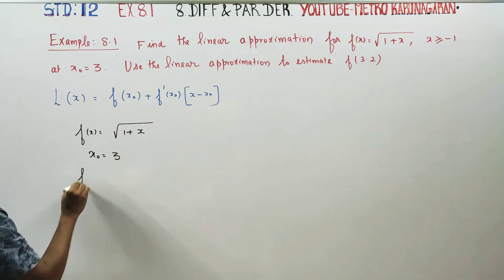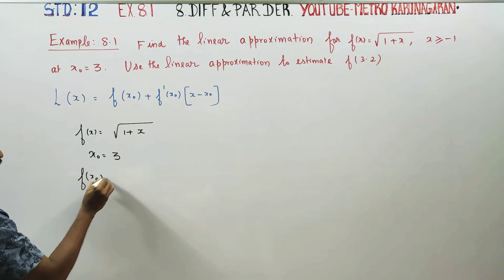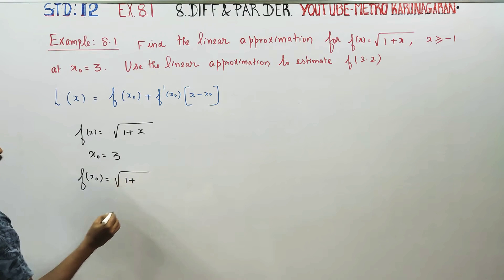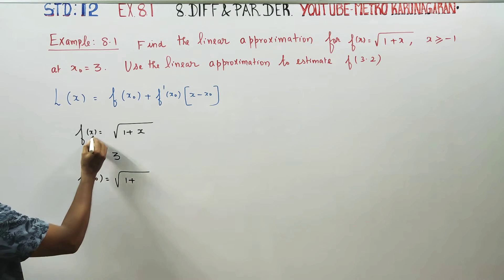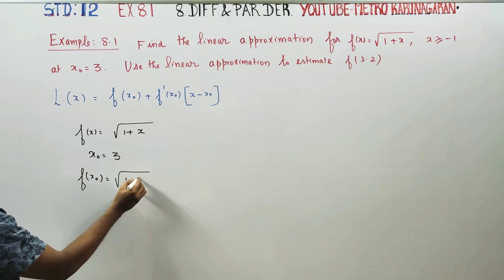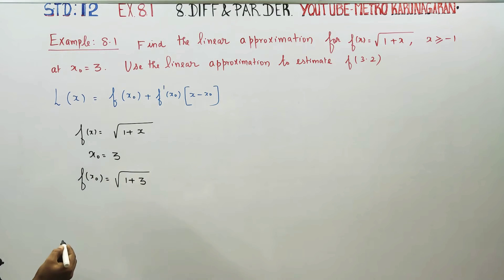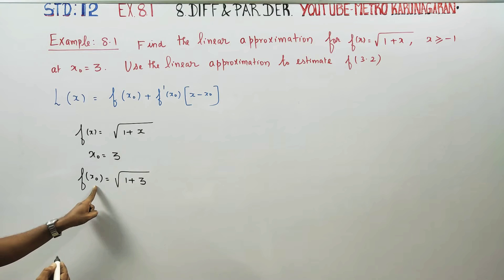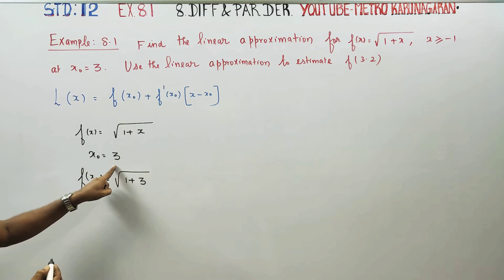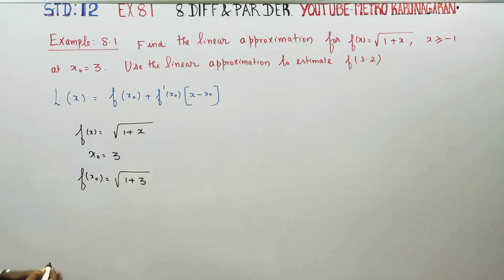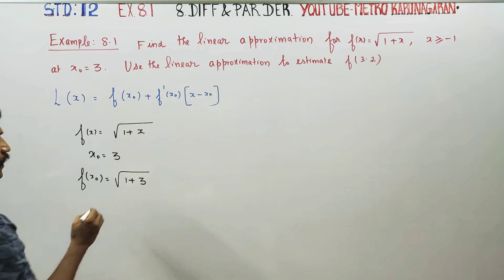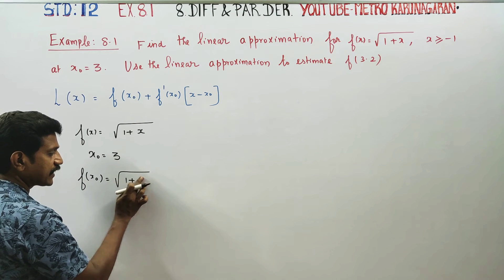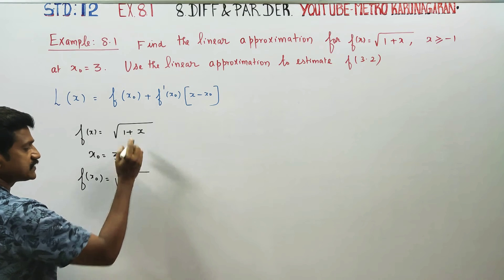First, find f(x₀). f(x₀) = root of 1 plus x₀.